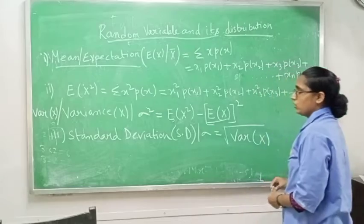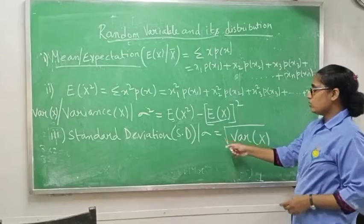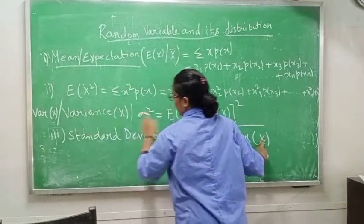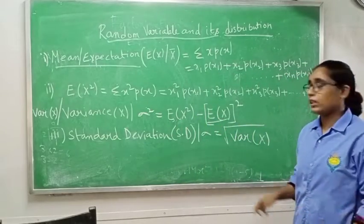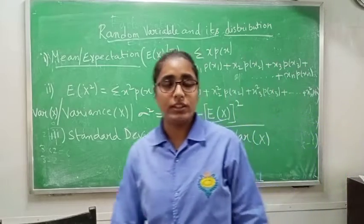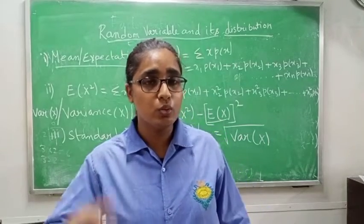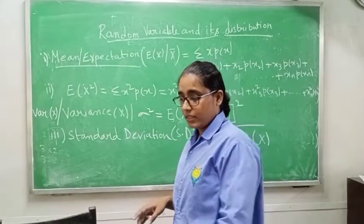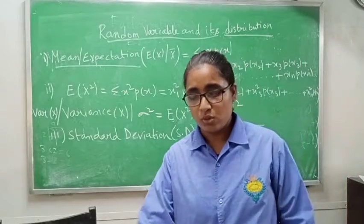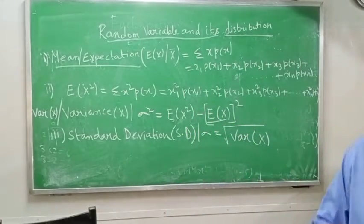Standard deviation, also known as S.D., equals the square root of variance of x. Whatever variance you get, just take its square root using your scientific calculator, because the answer will most often be in decimal or fraction form.